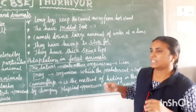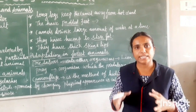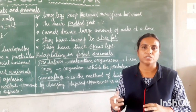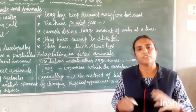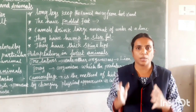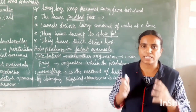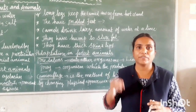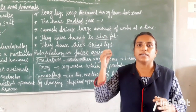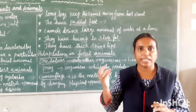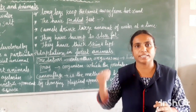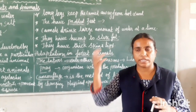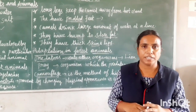The desert lizard also lives in burrows to escape from the heat during the daytime. Desert lizards have a special adaptation: they drop their tail whenever they are chased by a predator. This is to divert the predator and escape from it.